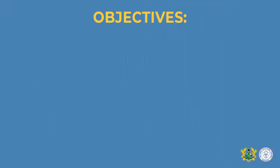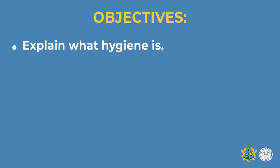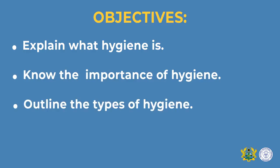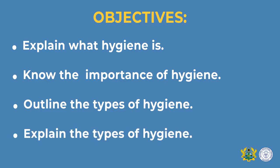Good hygiene enables us to prevent food spoilage and food poisoning. By the end of the lesson, you will be able to: 1. Explain what hygiene is. 2. Know the importance of hygiene. 3. Outline the types of hygiene. 4. Explain the various types of hygiene.